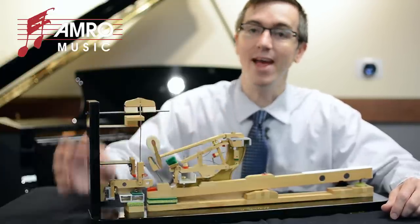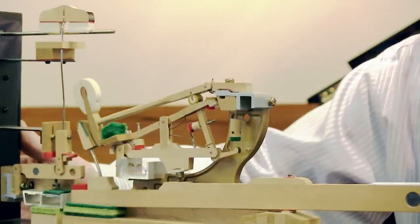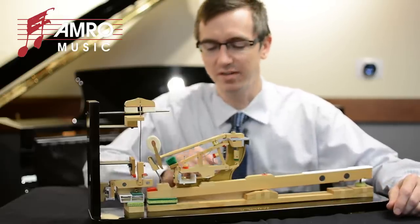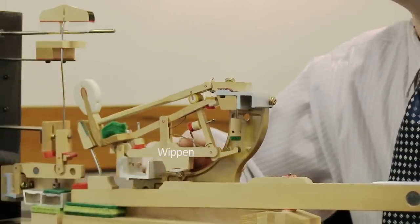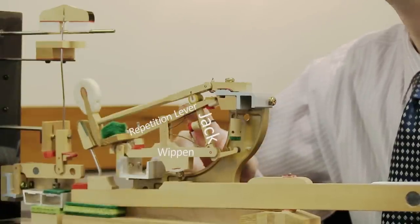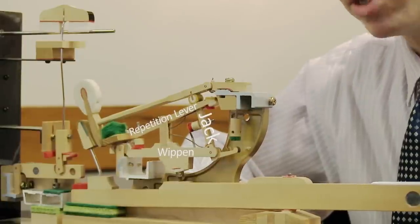Now let's take a look down at this end of it, past the fulcrum, past the pivot point for the action. So when we move the key we begin a series of movements on the escapement action. As we see the back end rise, we see the whippen raise, we see the jack raise and we see the repetition lever move also. Let's see how that works in action.